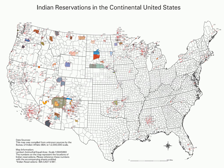Hawaiian home lands and Oklahoma tribal statistical areas are also recognized categories. A state-designated American Indian Reservation is the land area designated by a state for state-recognized American Indian tribes who lack federal recognition.